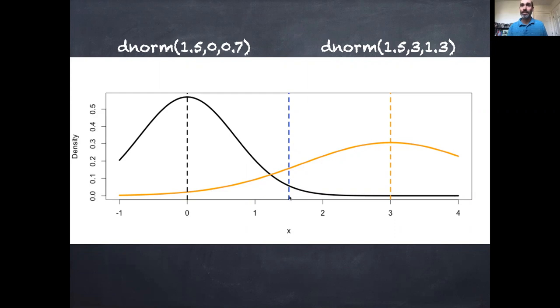I want to evaluate the probability density at this value 1.5, and I can plug that 1.5 into each of these, and I can get specific numerical values at that value of 1.5.